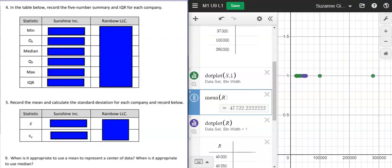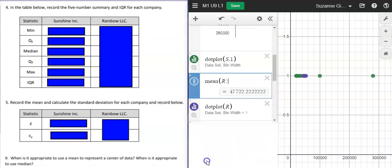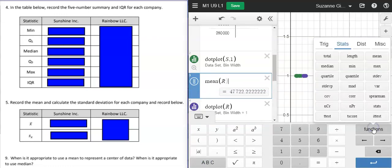Moving on in the task, we have to find all of these sample statistics here. To find all of these with Desmos, if we pull up this menu under functions, under stats, we have pretty much everything that we need.